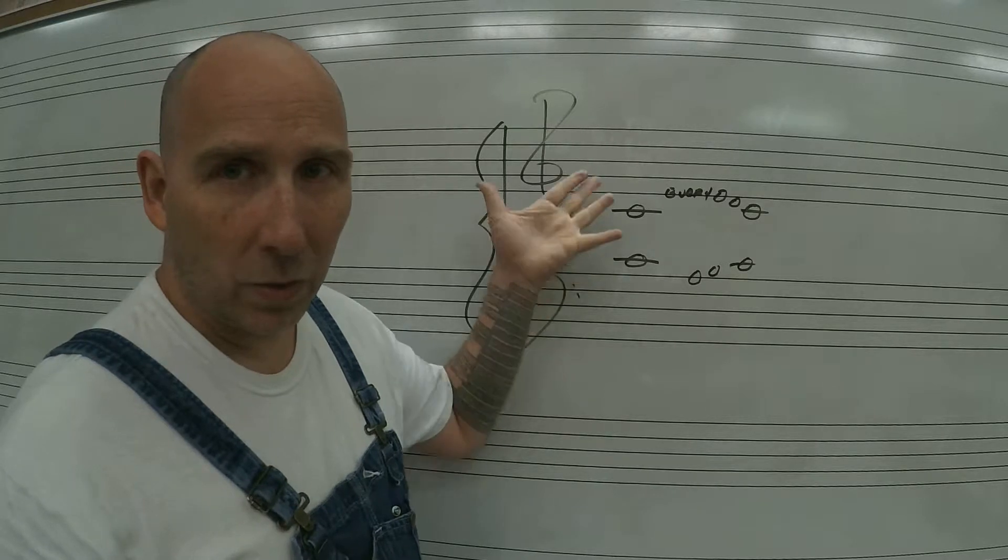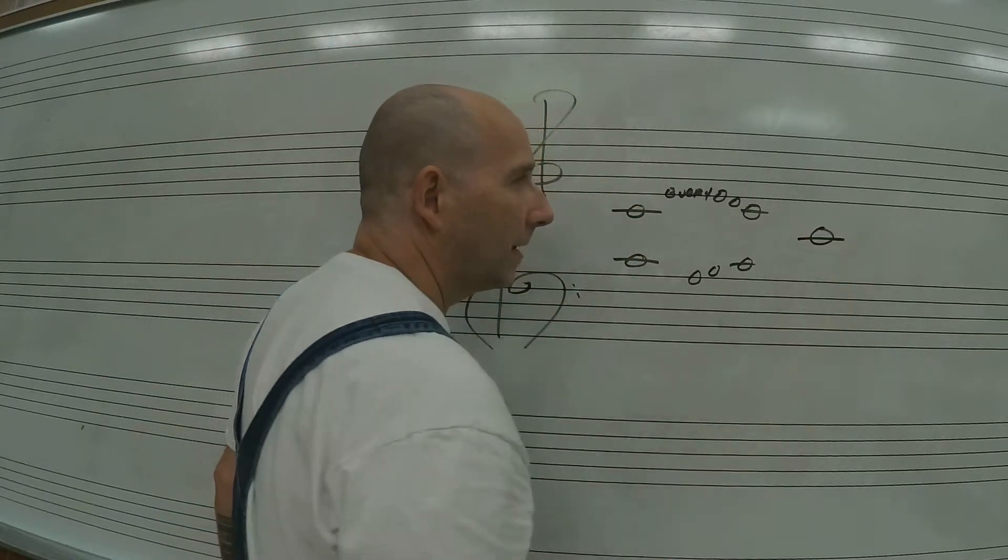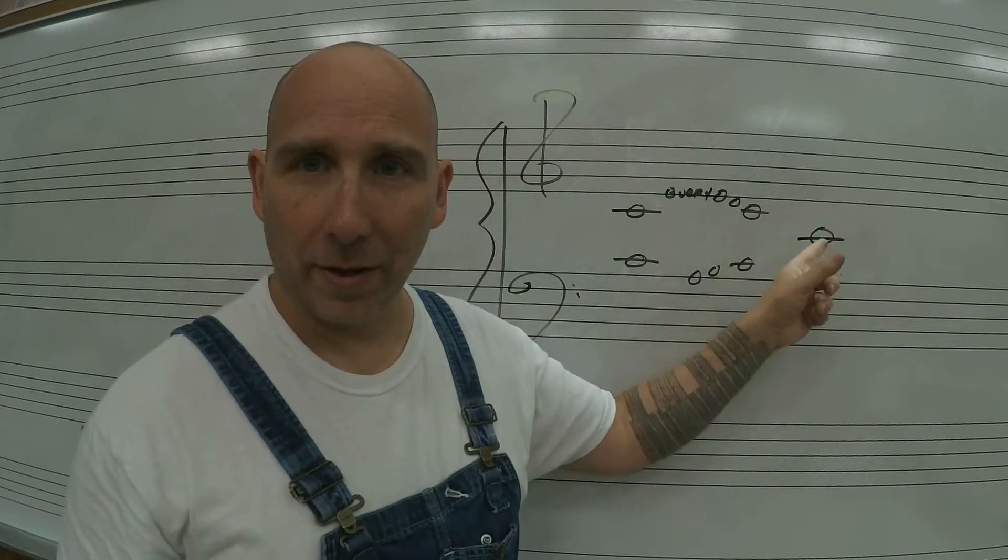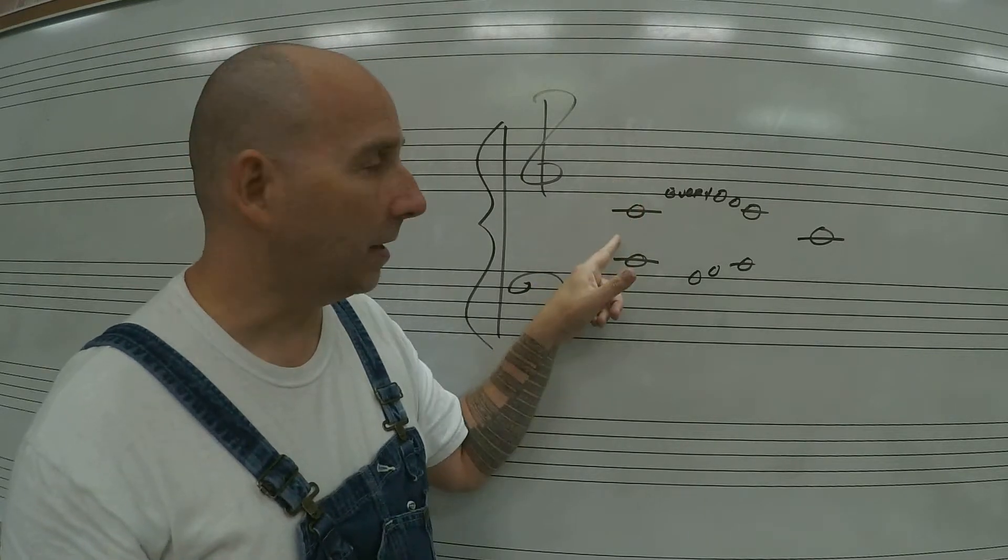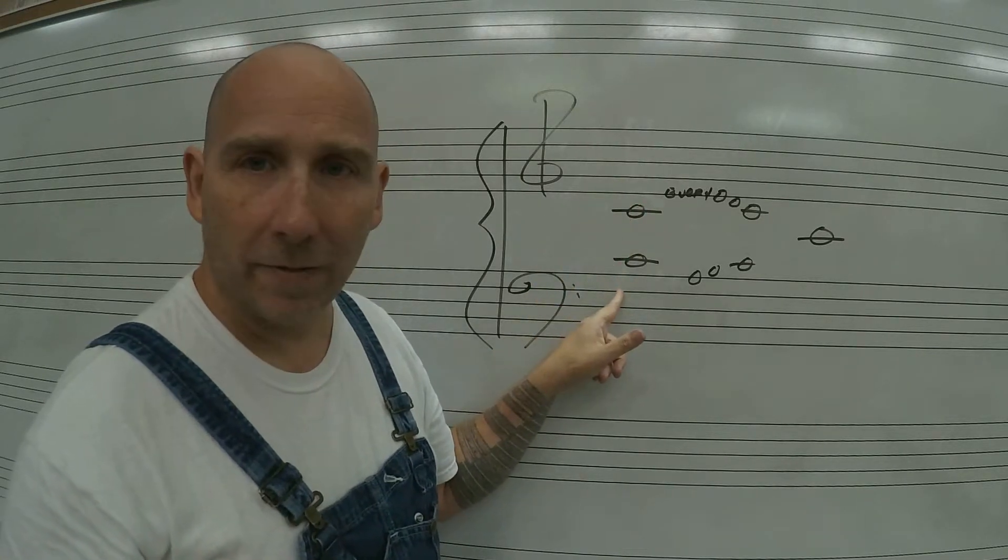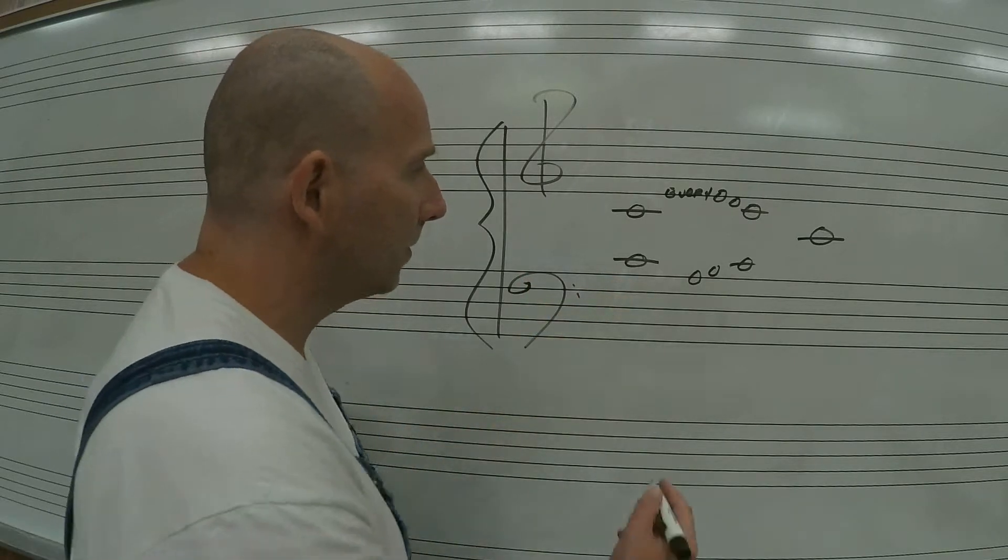Now you can tell which one it's written. You're not going to see a C written in the middle like that. There would be no way to tell whether that was treble clef or bass clef. But this one is tied to the treble clef, this one is tied to the bass clef, and you could possibly even have these notes.